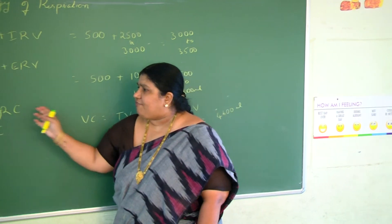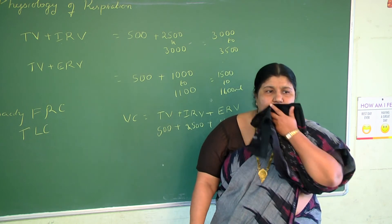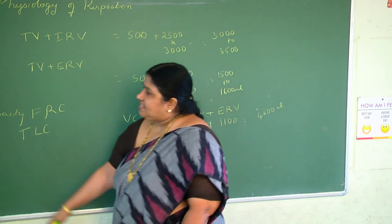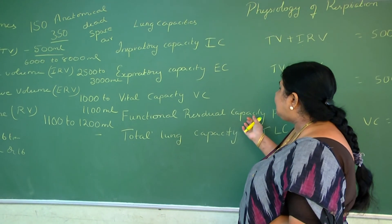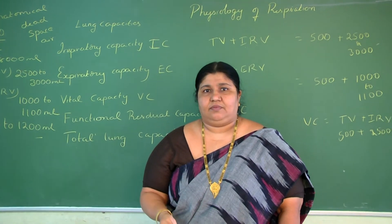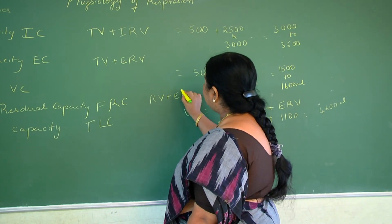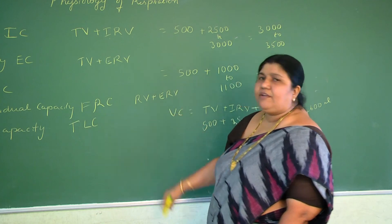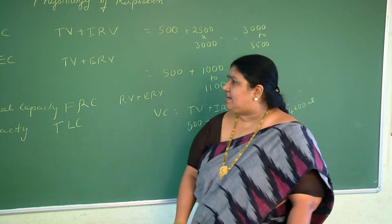What is FRC — functional residual capacity? Residual volume is the amount of air remaining in the lungs after forceful exhalation. But functional residual capacity is the amount of air remaining in the lungs after normal exhalation. We get FRC by summing ERV plus RV. ERV is 1,000 to 1,100, and RV is 1,200, giving approximately 2,200 ml as the functional residual capacity.